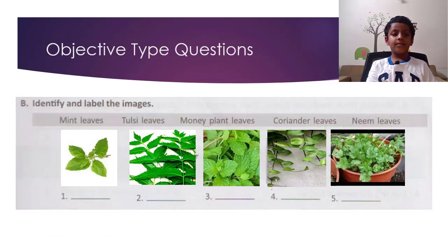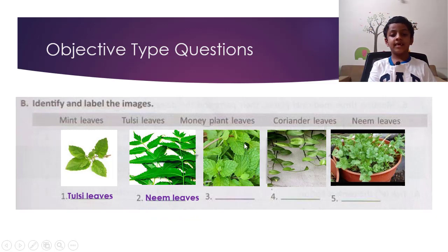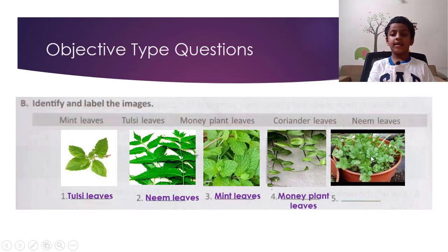B. Identify and label the images. These leaves are called tulsi leaves. These leaves are called neem leaves. These leaves are called mint leaves. These leaves are called coriander leaves.